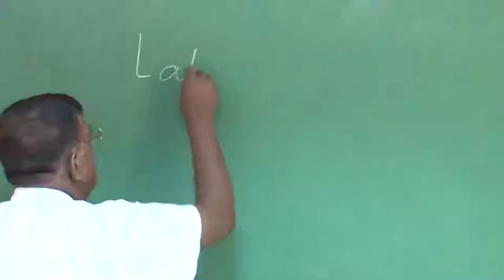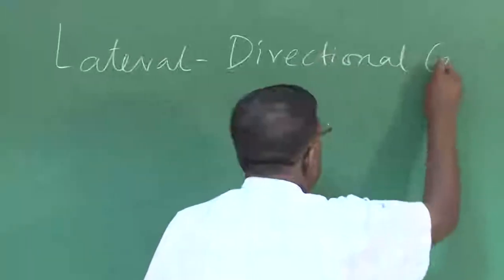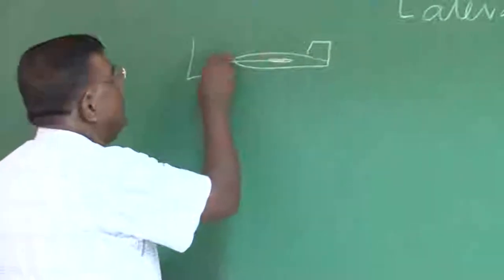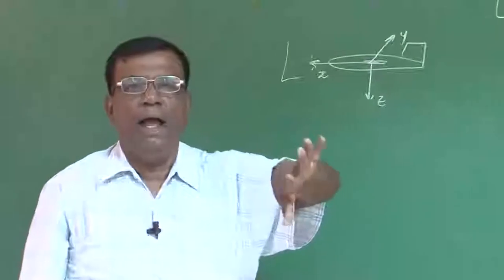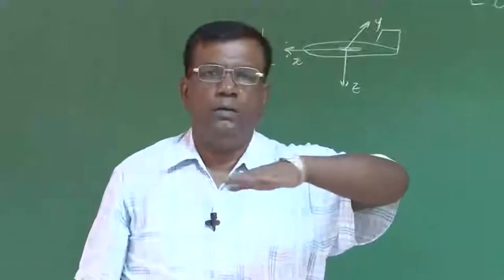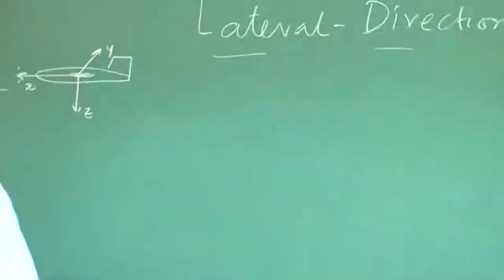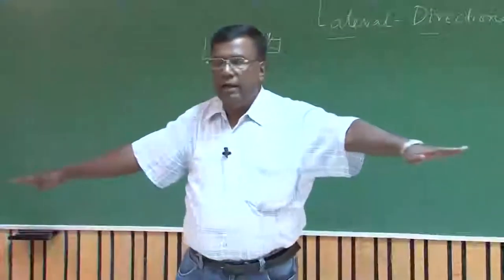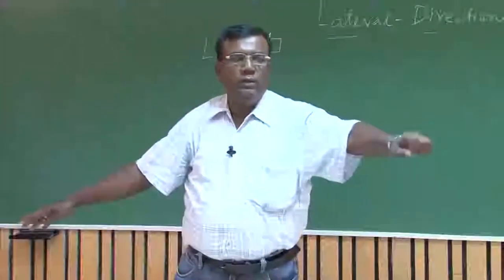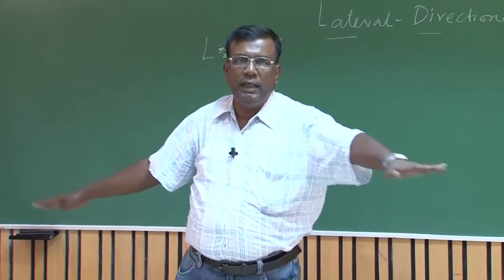When we are talking about the lateral directional case: lateral means, if this is the airplane with x-axis, y-axis, and z-axis, lateral means motion about the x-axis — roll or bank — and directional is motion about the z-axis — yaw. But lateral and directional cases cannot be decoupled generally. If this is the directional case — the right wing going back — the left wing will come forward, the relative airspeed of the left wing increases, lift increases, and so the airplane will bank also. So there is a coupling between directional and lateral motion.